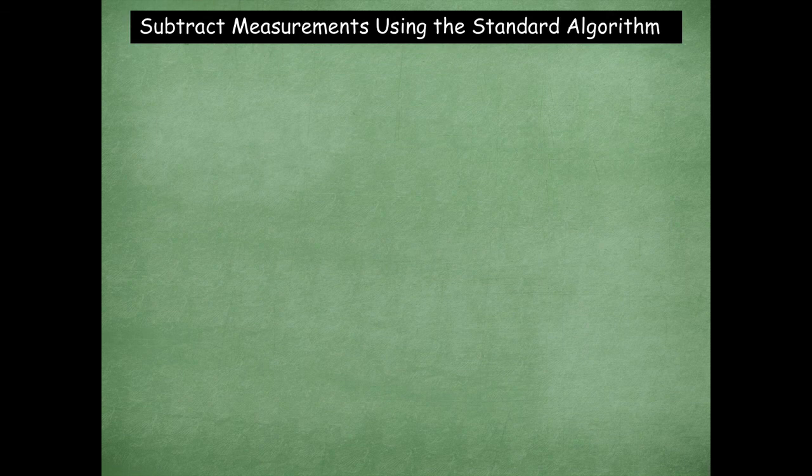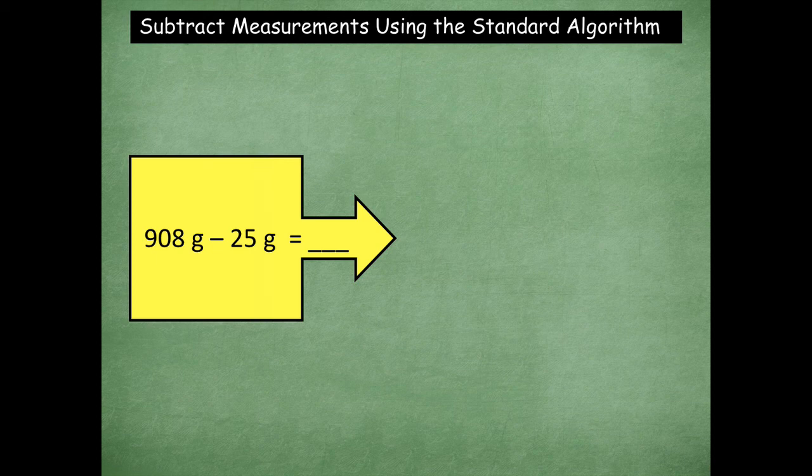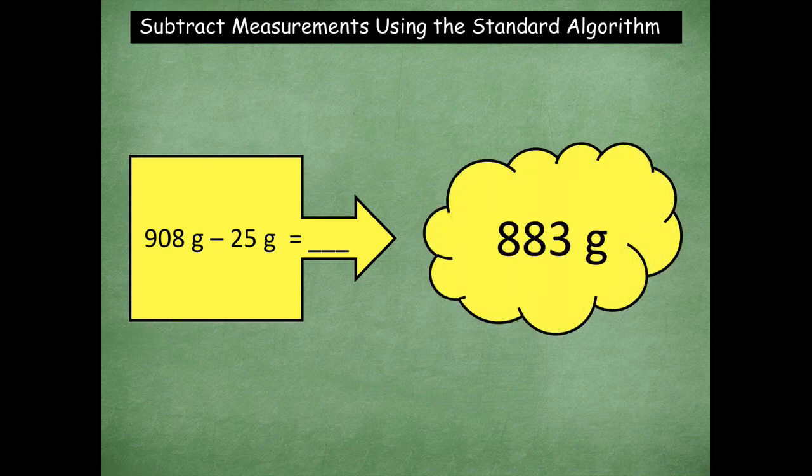Let's look at another one. Now we're measuring in grams. Grams are the weight of something. So 900 grams minus 25 grams is going to equal what, my friends? Go ahead and pause, solve, and then play to see the answer. Okay, here we go. 883 grams is the correct answer.